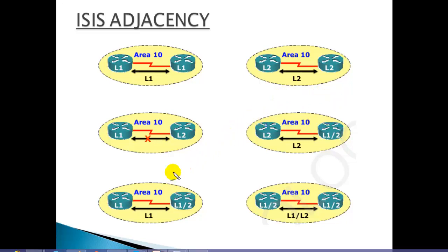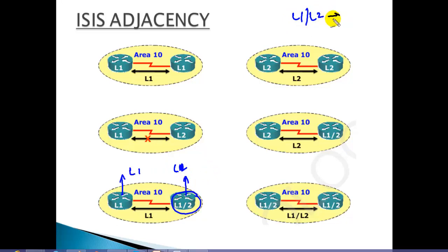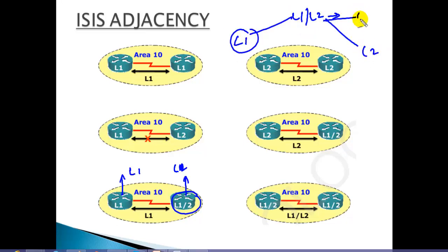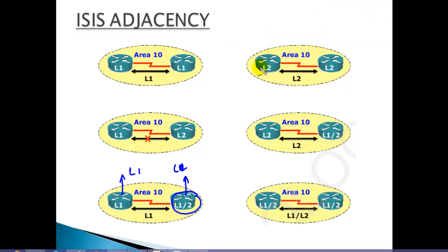If one router is Level 1 and the other is Level 1/Level 2, they still form the neighborship based on Level 1 information. Level 1/Level 2 is a type that supports all different levels — it will communicate with Level 1, Level 2, and also Level 1/Level 2 routers. So it communicates with every type of level router in IS-IS.